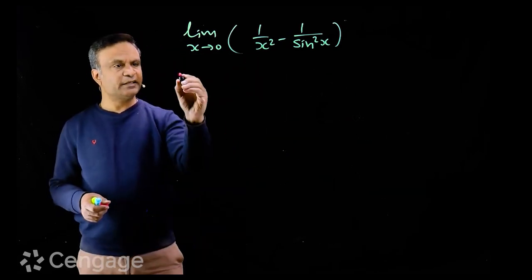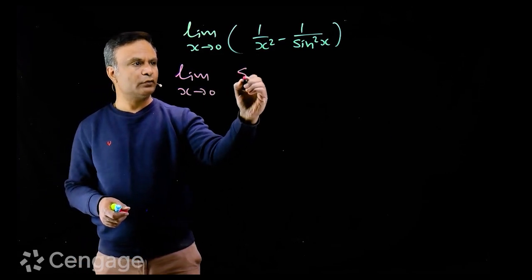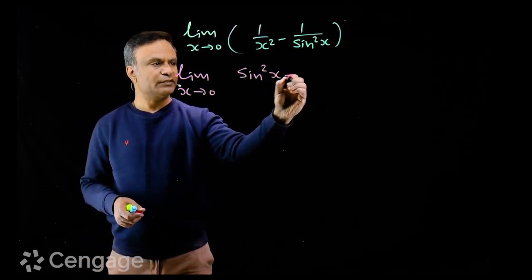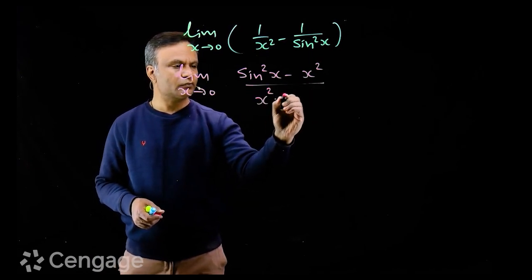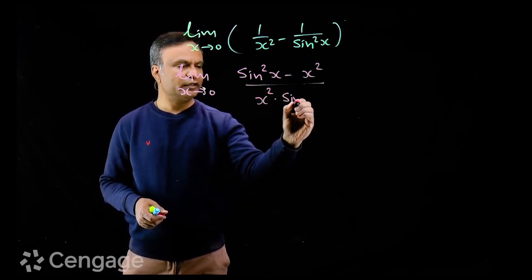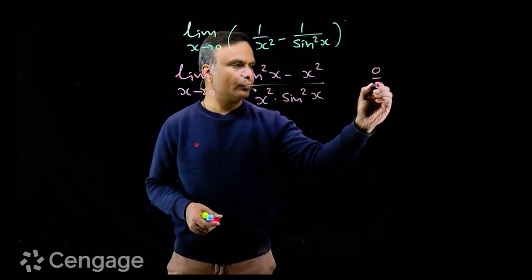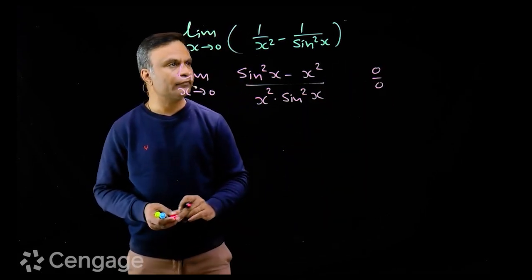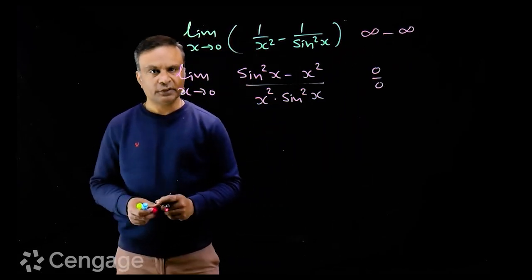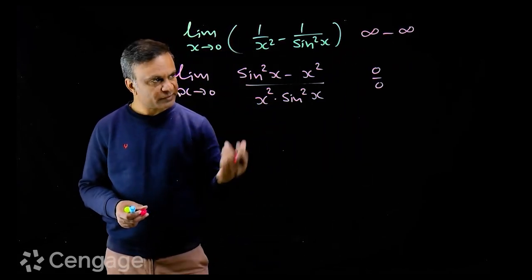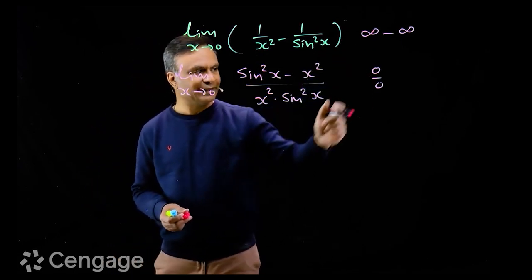We take LCM, giving: limit as x tends to 0 of (sin²x − x²) / (x² · sin²x). We have formed a 0/0 indeterminate form. Initially the indeterminate form was ∞ − ∞, so by simplification we are switching from one indeterminate form to another.